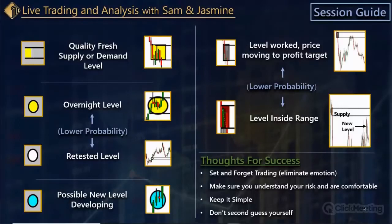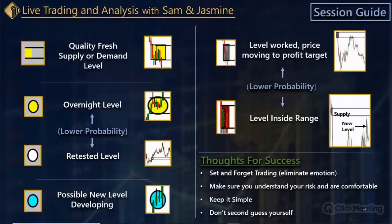That's why the overnight level is typically lower probability. The white circle simply means it's retested. Obviously that's going to be a lower probability opportunity. However, if price just touches the level and takes off, it's not that much lower in terms of probability.